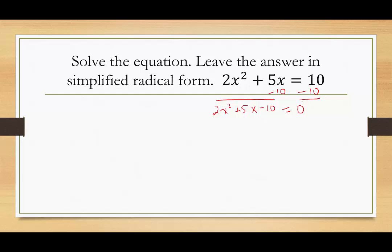4 and 5 — no. 2 and 10 — no. 1 and 20 — no. So now we're ready. A is 2, b is 5, and c is negative 10. Quadratic formula: x equals negative b plus or minus the square root of b squared minus 4 times a times c, all over 2 times a.